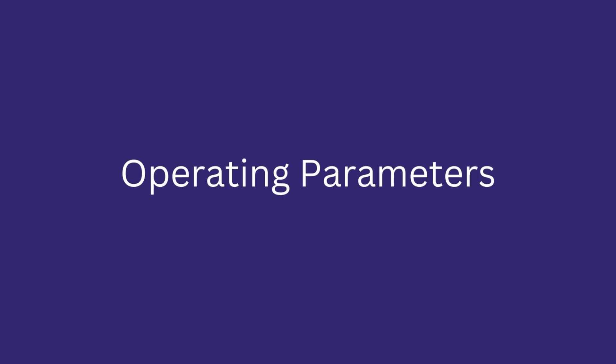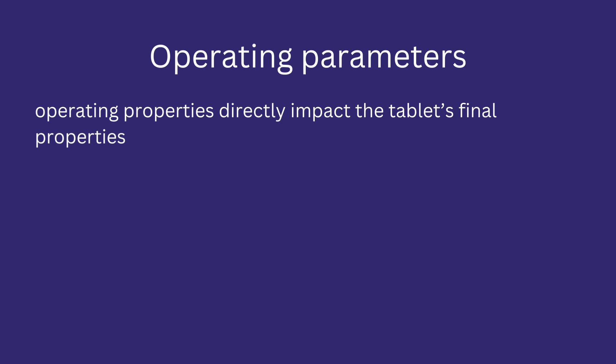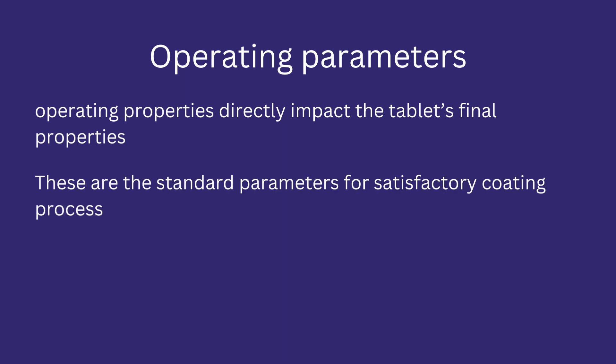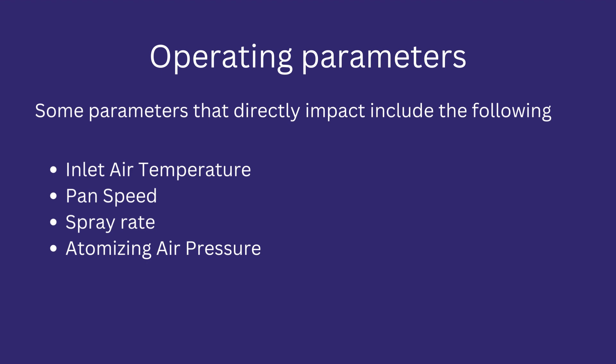Operating parameters: let's discuss the operating parameters of tablet coating equipment. An operating parameter defines how the coating equipment is operated to perform the coating process — they are the standards for a specific product that result in satisfactory coating. Some parameters that directly affect the operation of a coating pan include: inlet air temperature, pan speed, spray rate, and atomizing air pressure.